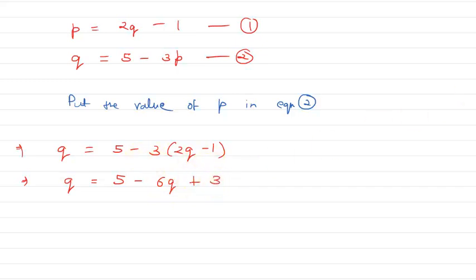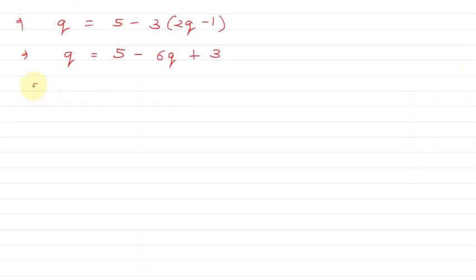This becomes 5 minus 6q, and minus times minus gives us plus 3. Now I'll move q to the left hand side, so we get q plus 6q equals 8. That's 7q equals 8, and hence q equals 8 by 7.